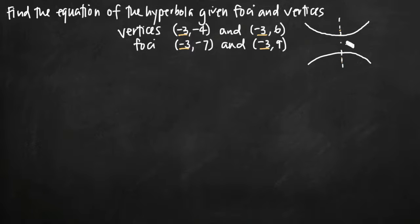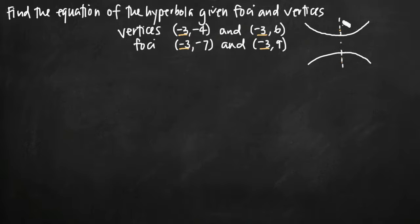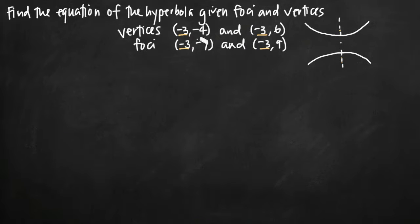We also know that this is a shifted hyperbola, as opposed to one centered about the origin. If it were centered at the origin, all x-values would be 0 and the major axis would be the y-axis. But because they're all at negative 3, we know we have a shifted hyperbola that opens up and down.